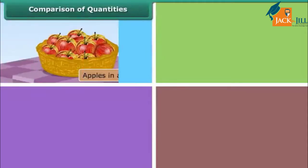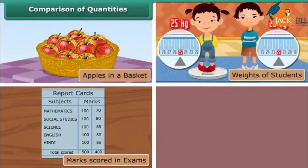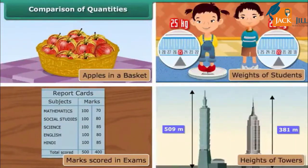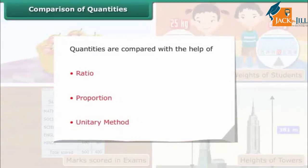Comparison of quantities: apples in a basket, weights of students, marks scored in exams, heights of towers, etc., are all examples of quantities. Quantities are compared with the help of ratio, proportion, and unitary method. Let us look at these methods of comparison one by one.